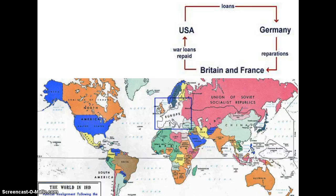There was something called the Dawes Plan, which actually helped out Germany with their reparations from the Treaty of Versailles, and also helped the US get our loans repaid from Britain and France with some interest. I think we're the only country that could figure out a way to make money off of other people's debts from a war that we helped them out with in the first place.